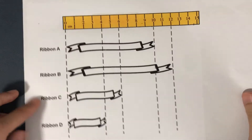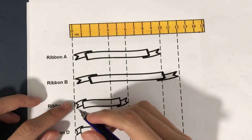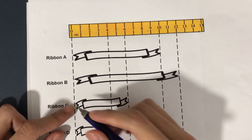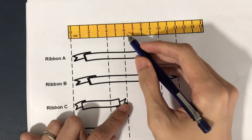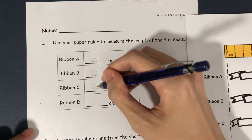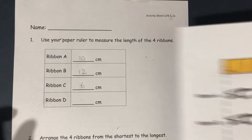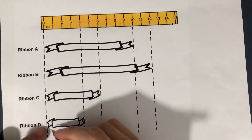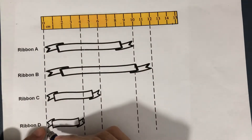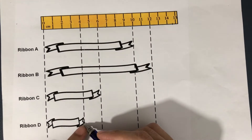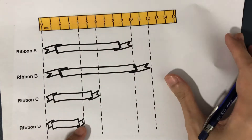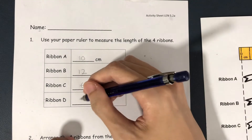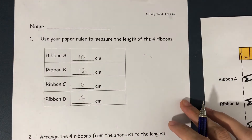Ribbon C. Make sure that Ribbon C is at the zero mark — yes, one end of it is at the zero mark. Let's go to the other end and read off. What is this number? 6 cm. So, Ribbon C is 6 cm long. Finally, Ribbon D. Check that Ribbon D is at the zero mark — yes, it is. Let's go to the other end and read off from the ruler. How long is it? 4 cm. Now we have the length of all 4 ribbons.